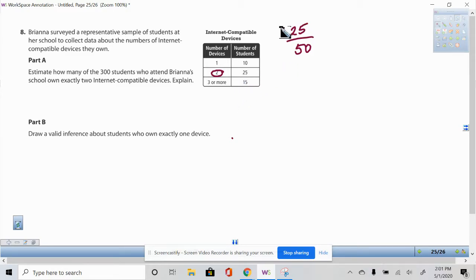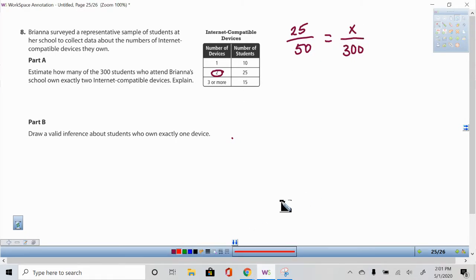Now the question is, what if instead of having 50 as our sample size, we have 300 as the total population? What would our x be? How many of these students would we estimate to have two devices?